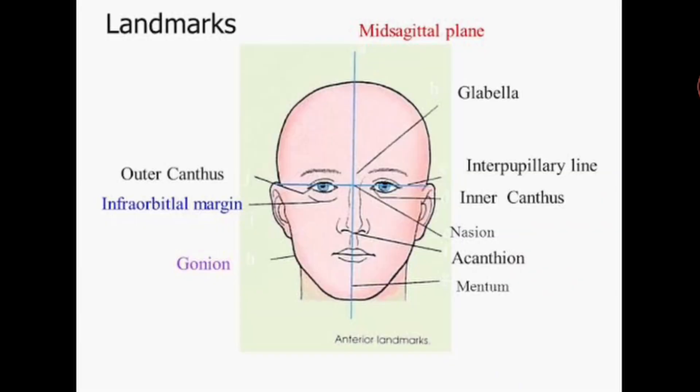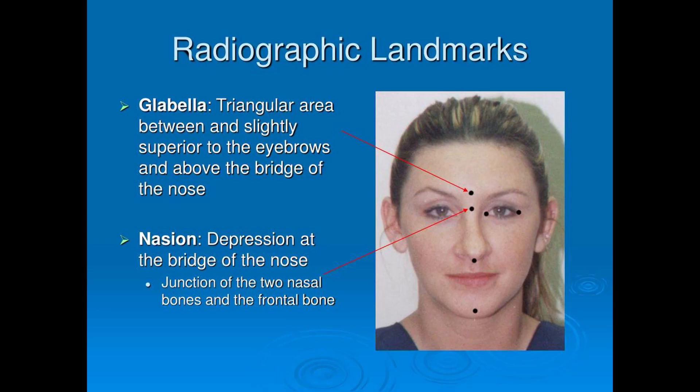Next is the infraorbital point. You can see it here — the infraorbital margin is the lowest point on the inferior orbital margin. Our next landmark is the nasion, or the frontonasal articulation.